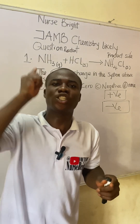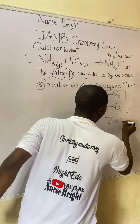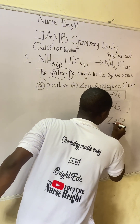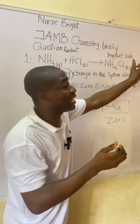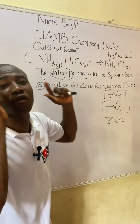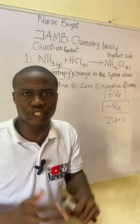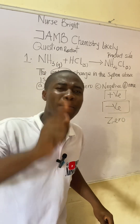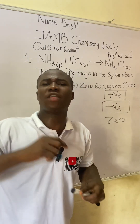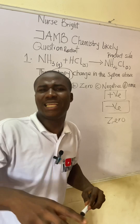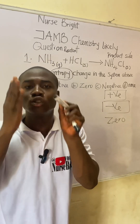Lastly, if the product side and the reactant side have an equal number of gas species, we simply say the entropy change of that reaction is zero. So in summary: more gas on product side → positive; more gas on reactant side → negative; equal gas species → zero.